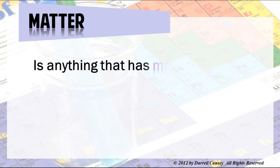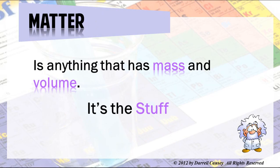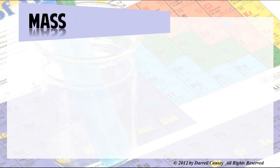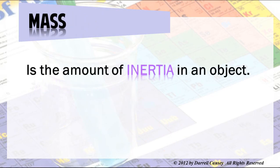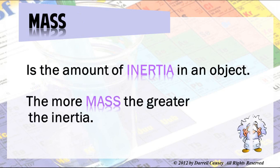Matter is anything that has mass and volume — it's the stuff around us. Let's look at mass and volume. Mass is the amount of inertia in an object, and the more mass, the greater the inertia.